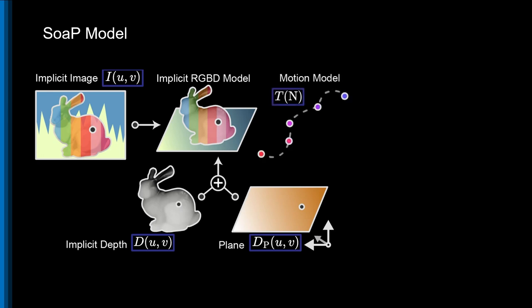We represent the camera motion as a continuous spline curve, jointly trained with the rest of our forward model.